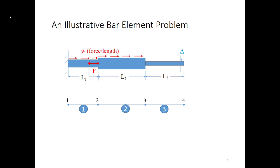Next we need to label the elements. I'm going to use these big circles so we can keep the numbers distinct. I've got three elements and four nodes in this problem.